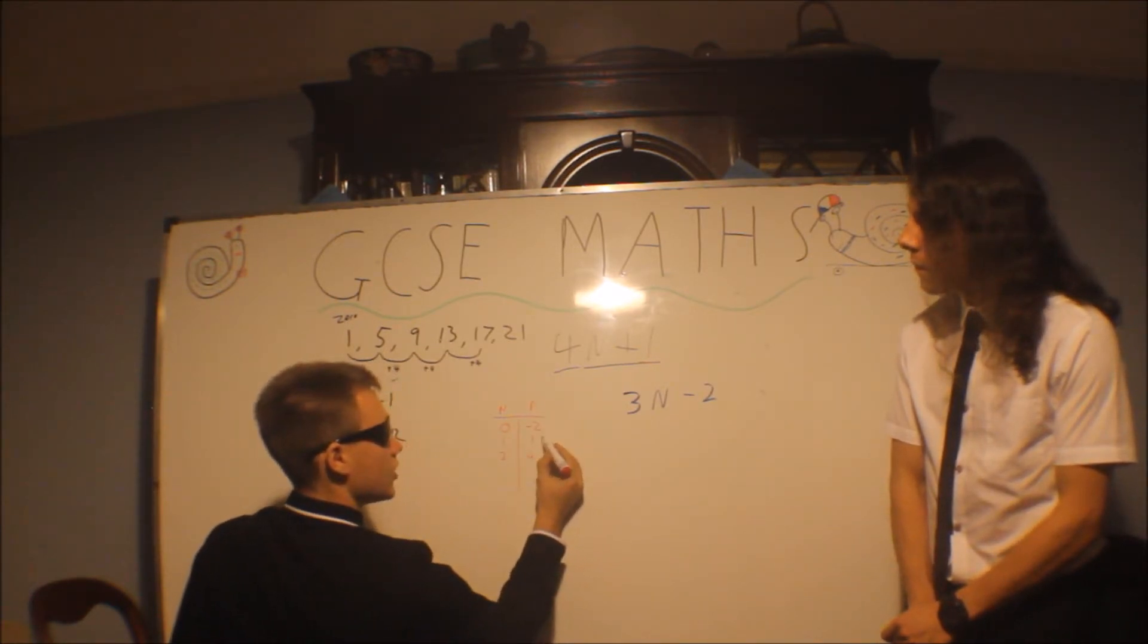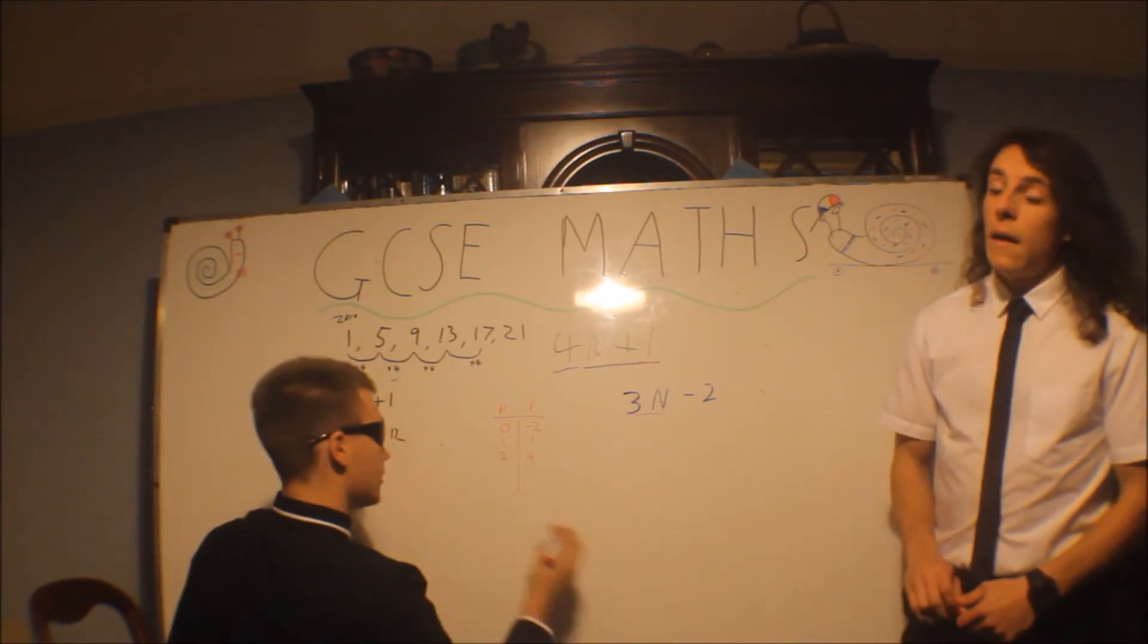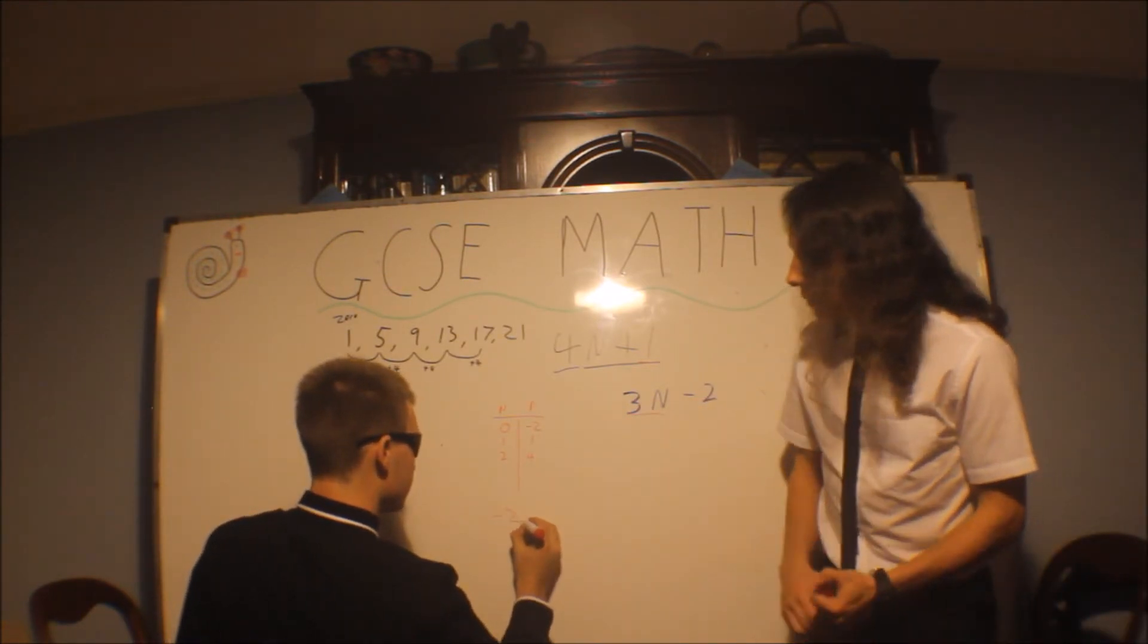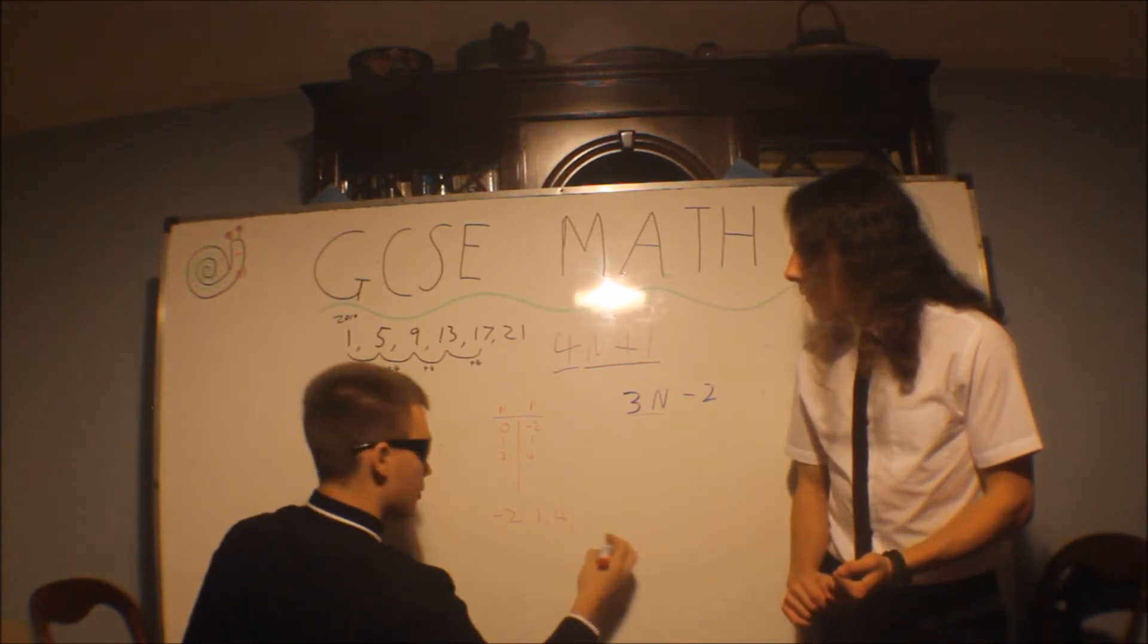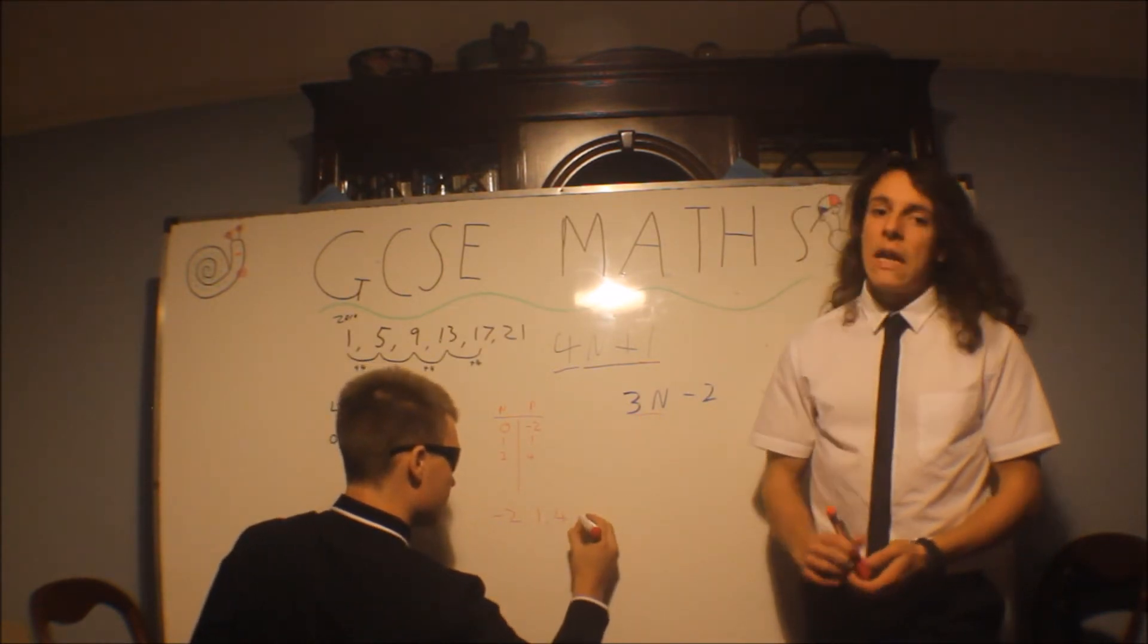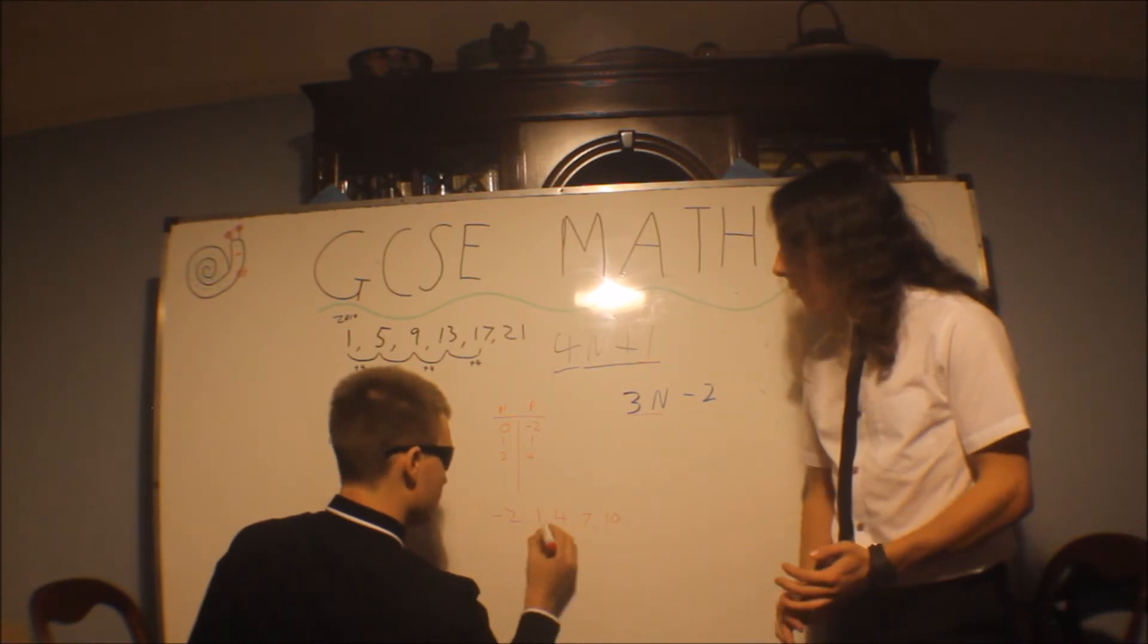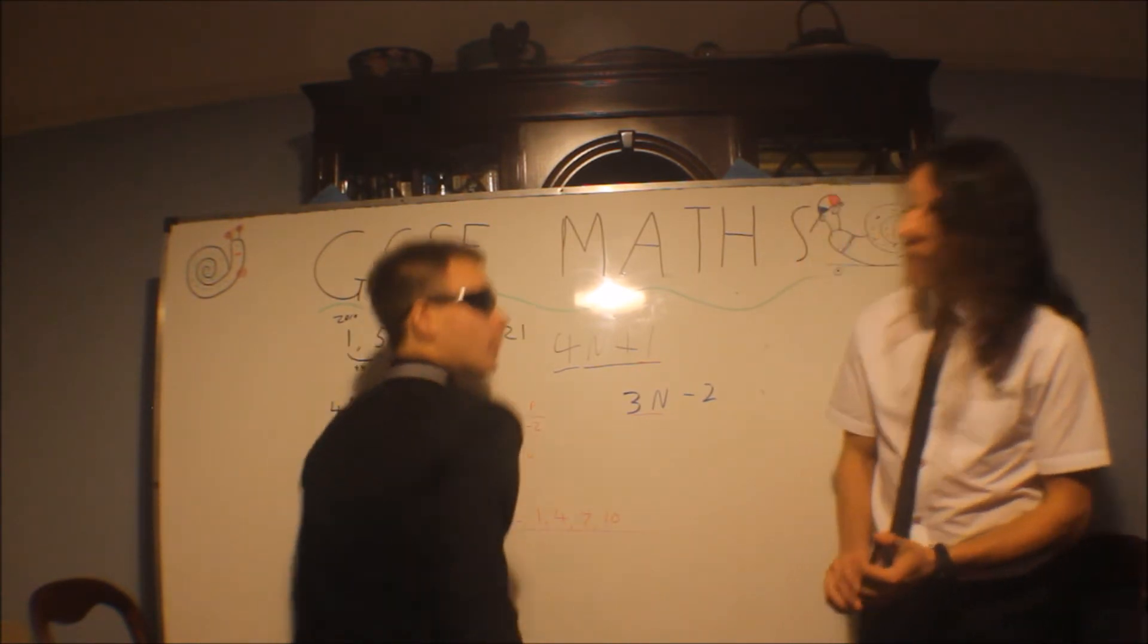And you'll notice this is just going up in 3s, which is what the 3n symbolizes. And then you can just continue as that is, but you start as minus 2 and you just go up. So you just keep on plussing 3s, that's the difference. And I might say write the first 5 numbers: 1, 2, 3, 4, 5. Like that.